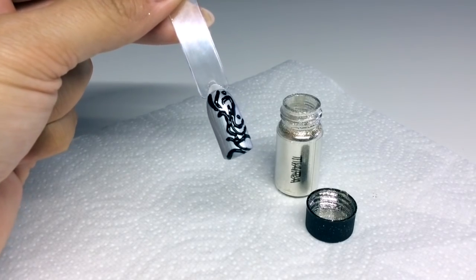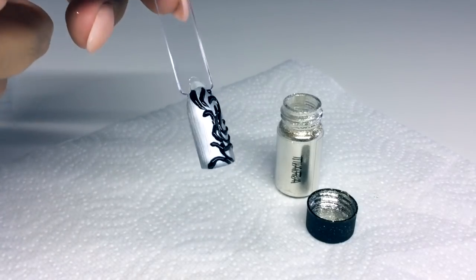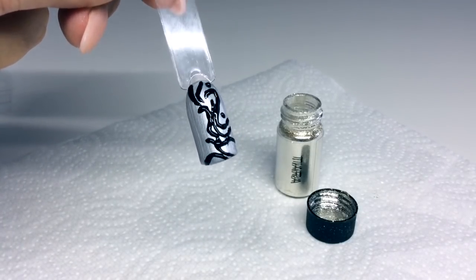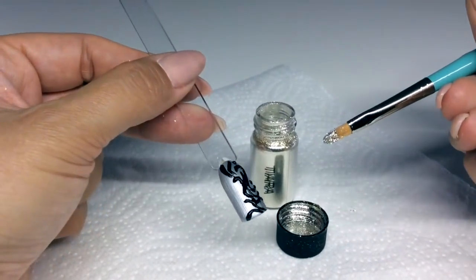Here's the design done about three times over and it's quite raised as you can see. All we're going to do now to make this a metallic embossed look is just to pat tiara all over the nail.